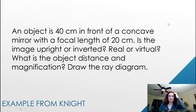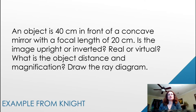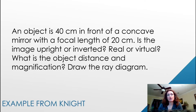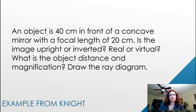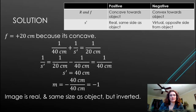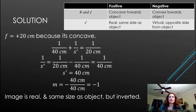Let's do an example problem from Knight's textbook. An object is 40 cm in front of a concave mirror that has a focal length of 20 cm. Is the image upright or inverted, real or virtual? What is the image distance and magnification? Draw the ray diagram.